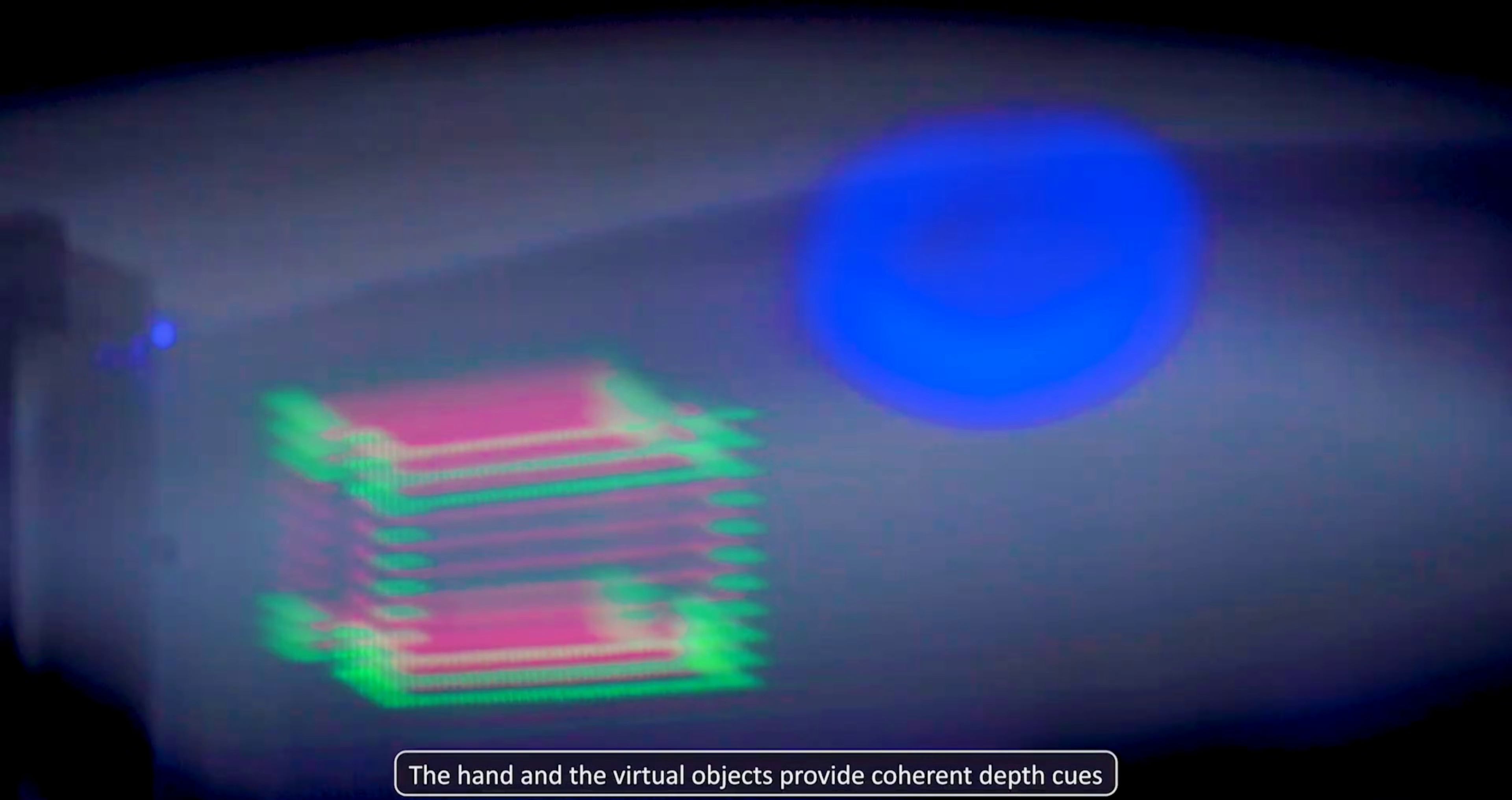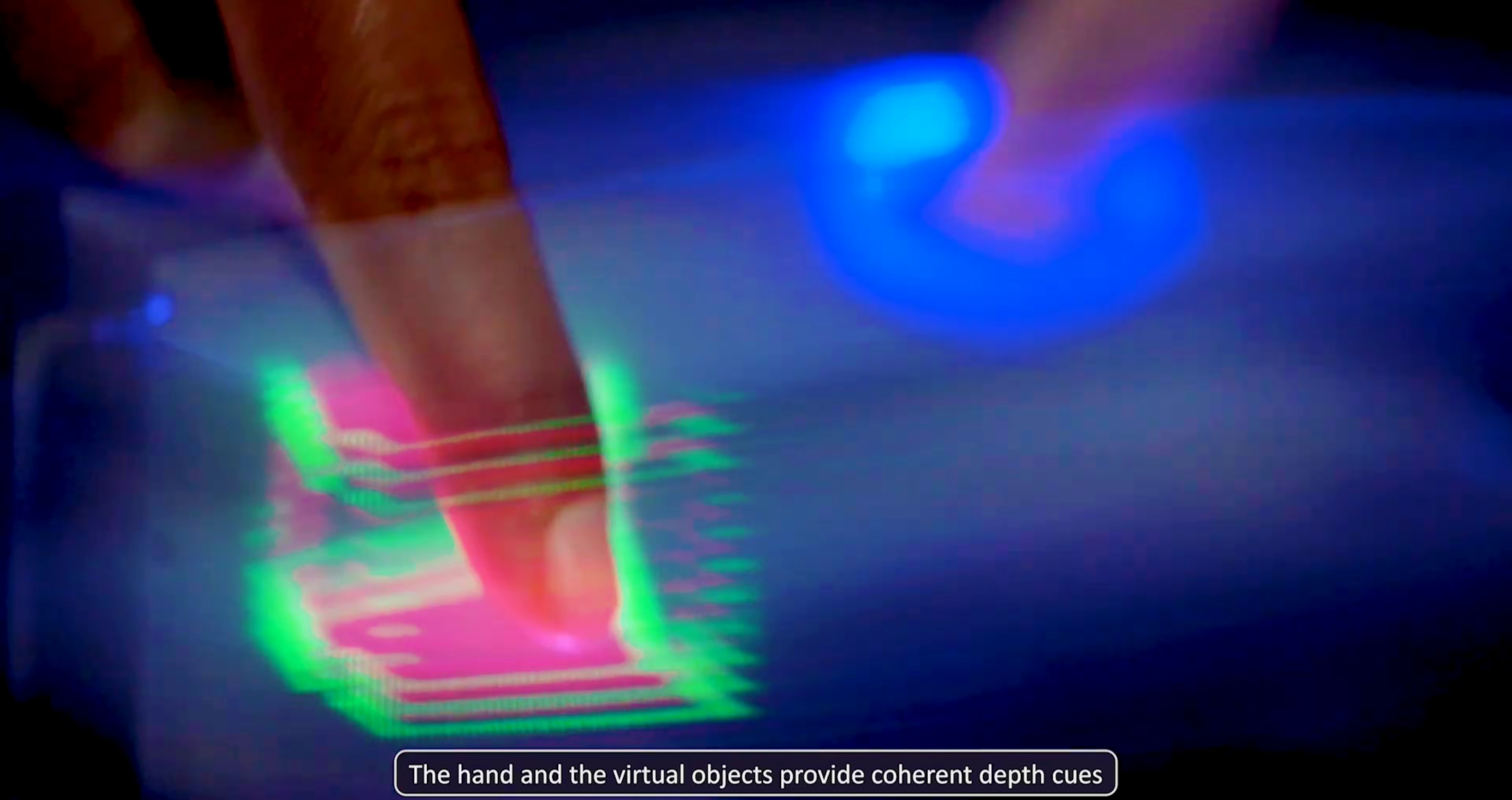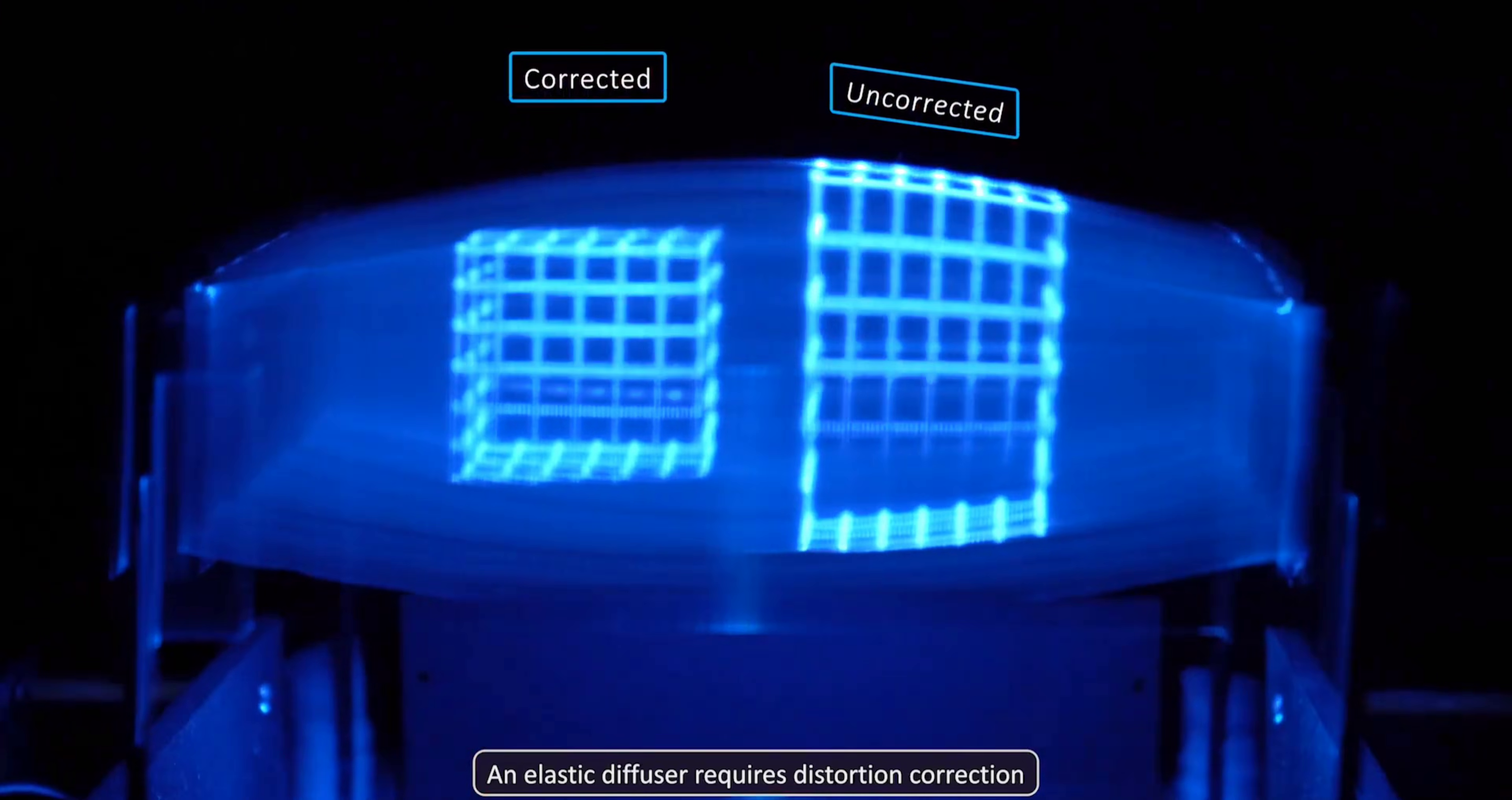FlexEvol allows users to reach through the diffuser to manipulate 3D content. Interactions occur when users touch or pass between diffuser strips. The system supports gestures such as grasping, pinching, pushing, rotating, and sliding.